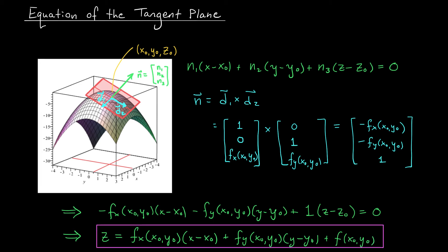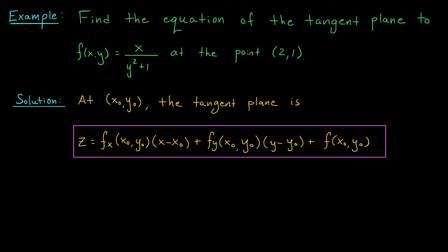As an exercise, I encourage you to go back and compare this with the equation of our tangent line. They actually look pretty similar. For now, though, let's check out an example. Okay folks, we've just derived the formula for the equation of a tangent plane, and now we're going to put this formula to use. I want to know the equation of the tangent plane to the function f(x,y) equals x over y squared plus 1 at the point (2, 1).